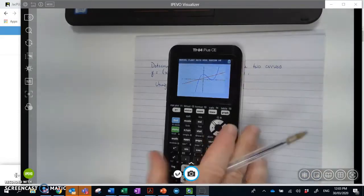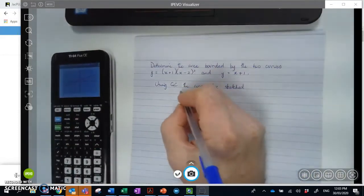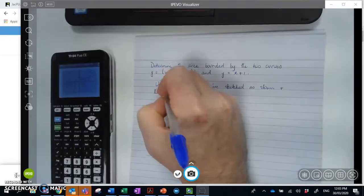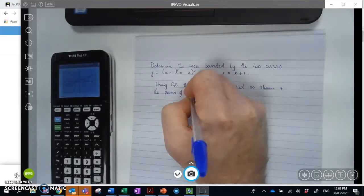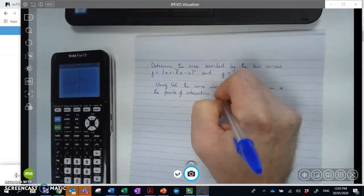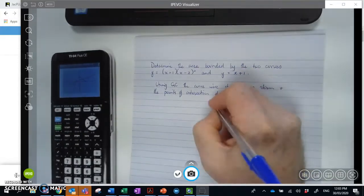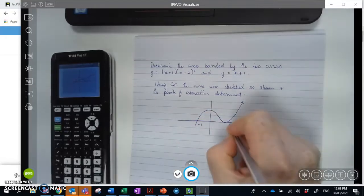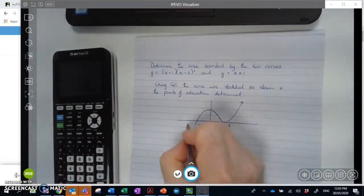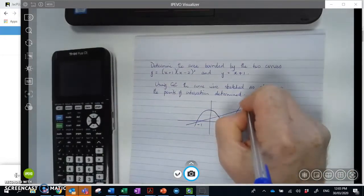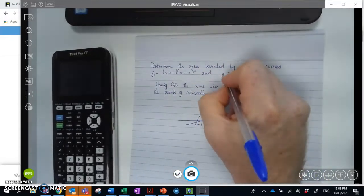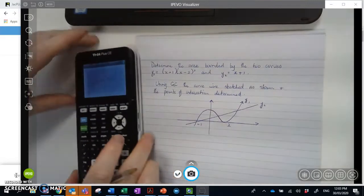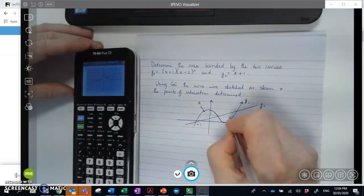Because these will constitute bounds for our integrations. So we'll do those things together. So using the GC, the curves were sketched as shown, and the points of intersection determined. So sketching those. And then with a bit of creative license there, I've called one y1 and one y2, so that we've got those things sketched relatively quickly. Now this will become area 1, and this will become area 2.